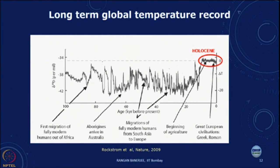This period of Holocene stability is now threatened by human activity. Geologists have coined a term for the current era: the Anthropocene — an era where it is human activity that is dictating the changes happening on the earth and its climate. The Anthropocene has been shown to be unsustainable into the future unless we make changes in the way we develop and operate our energy systems.